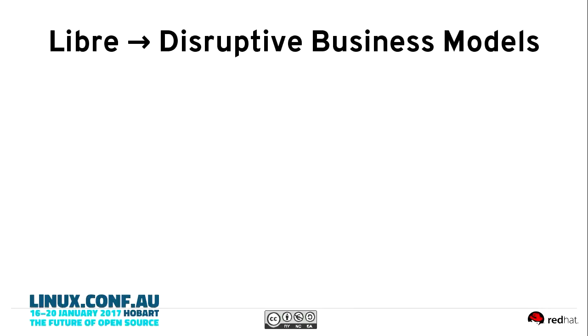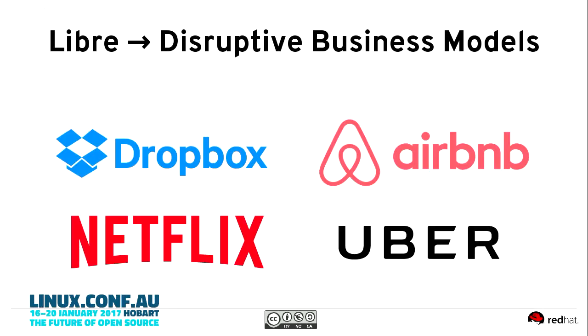You may be generating data as part of a government service or business application, but it's being hidden behind layers and layers as a service. But the libre aspects of open source are generating those cool, disruptive business models everyone raves about. None of these organizations can exist without open source, and yet they offer their services as a service. They don't have to provide open APIs. They don't have to provide the code that runs those services. They could consume vast quantities of open source technologies, and unless they are under something like an Affero GPL license, they don't have to contribute back.